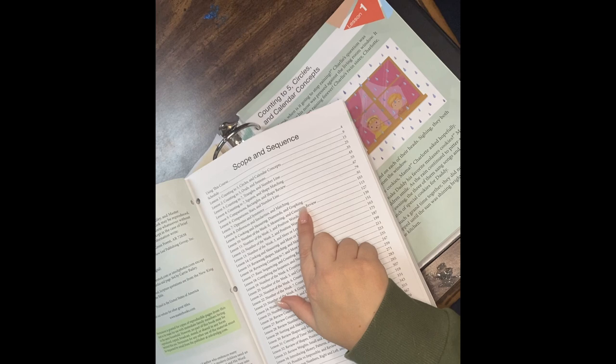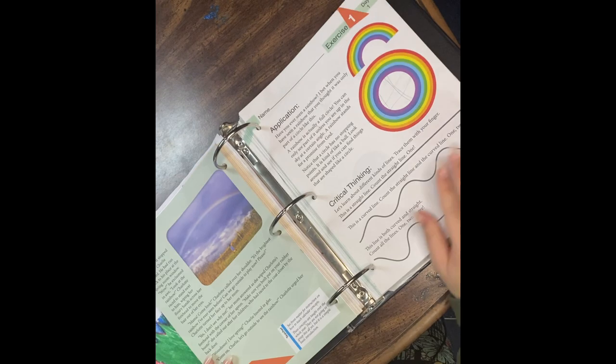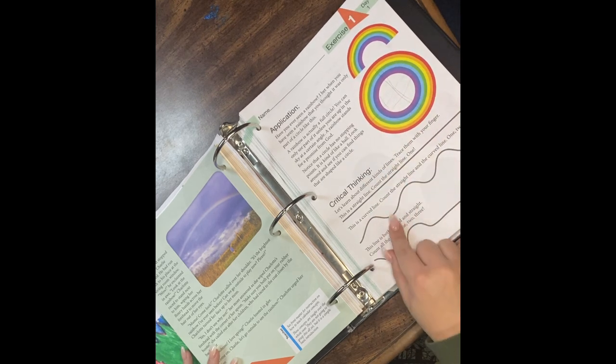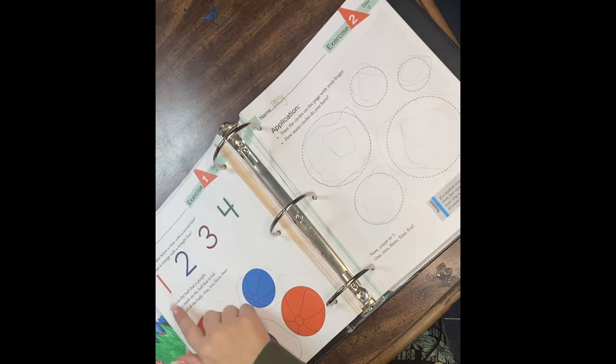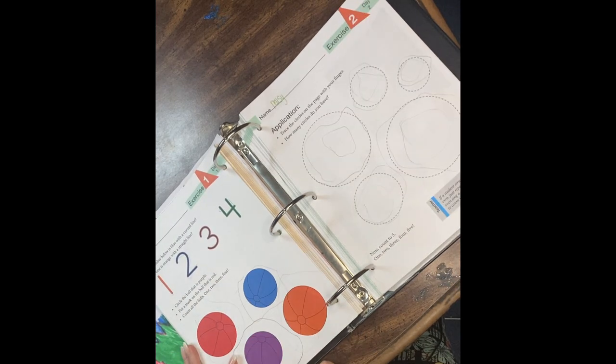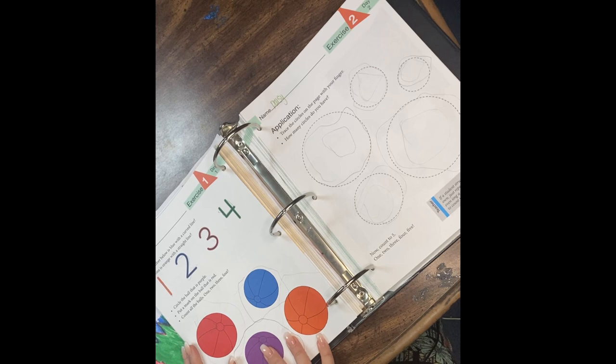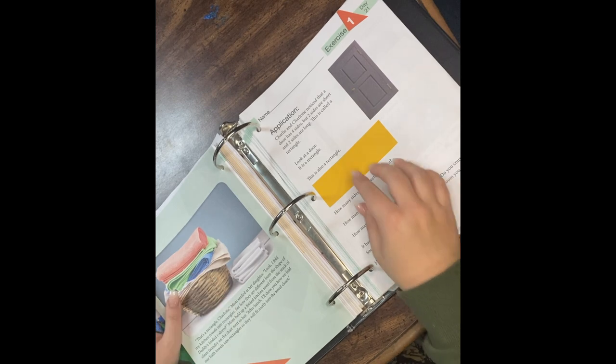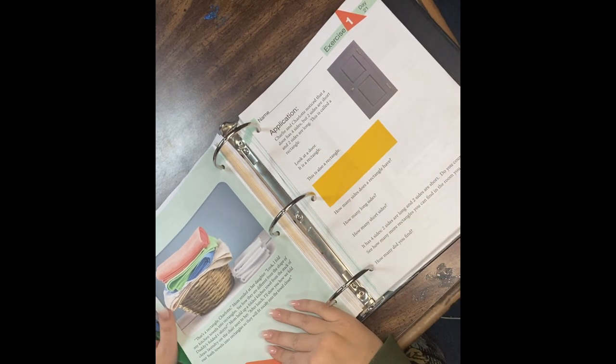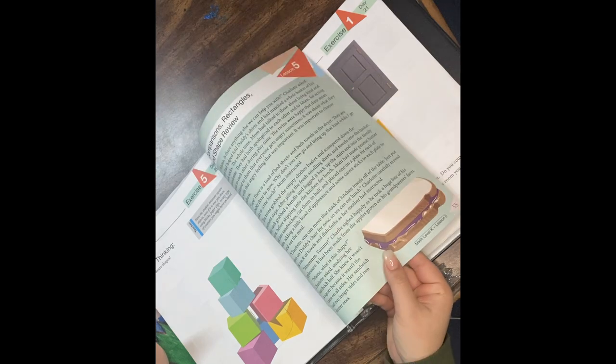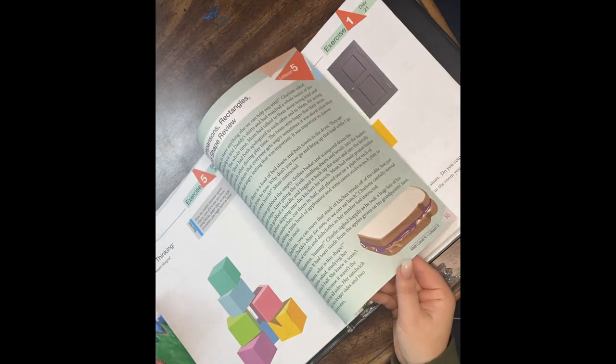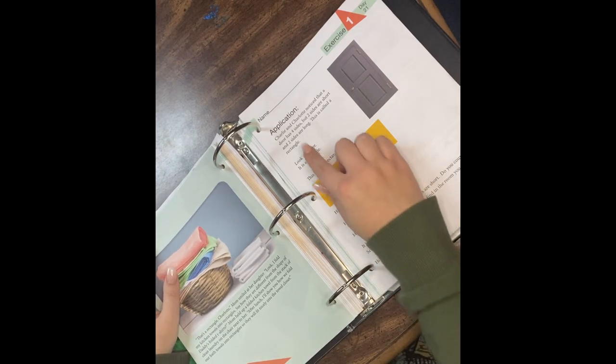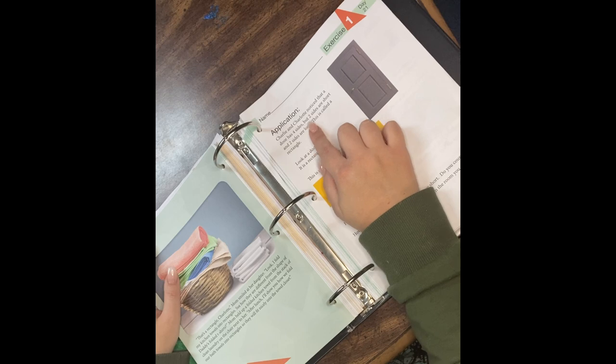The first nine lessons for quarter one focus on shapes, opposites, and an introduction to cooking, measuring, and graphing. This is the very first lesson in the book—super simple, talking about a rainbow and symmetry, having her trace lines, some number recognition and counting, some color recognition, and counting the balls. Jumping ahead to lesson five, Charlie and Charlotte are the characters we follow in all of the books.